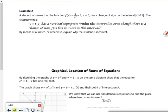So example two. So it says the student observes the function f of x is 1 over x squared minus 2. So it has a change of sign on the interval. So it says f of x has a vertical asymptote within this interval. So even though there is a change of sign, it has no roots. Right, so let's have a think about it.